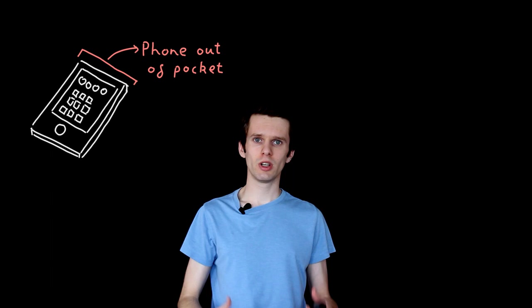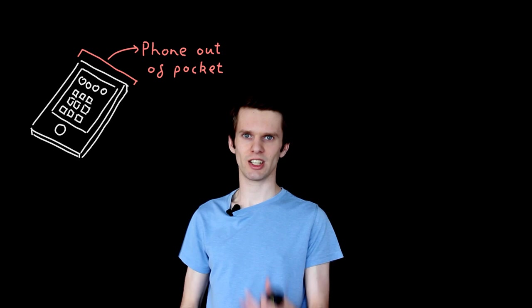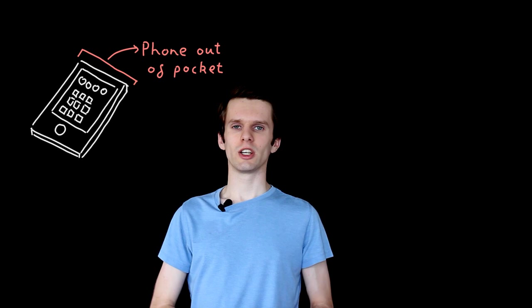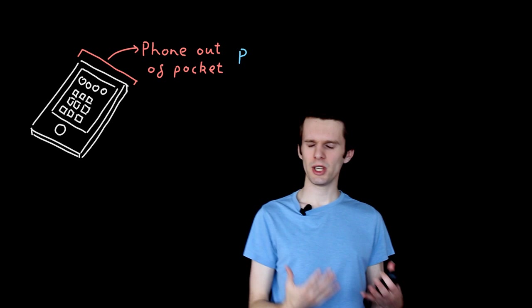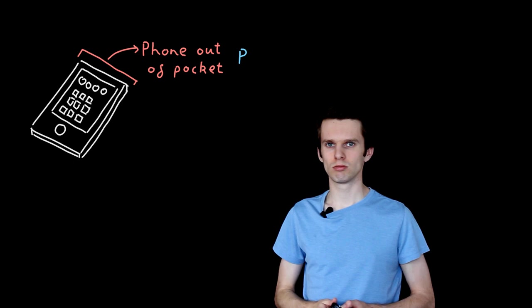We're going to set up a little scenario. Think about a mobile phone. Let's try and design the logic which decides whether a phone should be unlocked or not. We're going to pretend this mobile phone has three sensors. The first sensor checks whether the phone is out of someone's pocket, maybe using some clever machine learning and accelerometers. We don't care about that. All we're going to do is say this is called P, the symbol P in propositional logic. It can be either true or false.